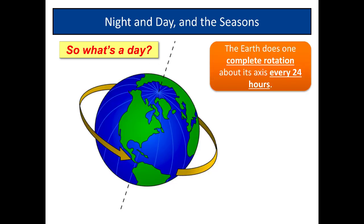Now, if that was a year, what's a day? A day is a complete rotation around the axis. The Earth spins on its axis — we're not aware of this, but we are actually travelling quite fast. The Earth spins on its axis once every 24 hours, so a day lasts 24 hours.